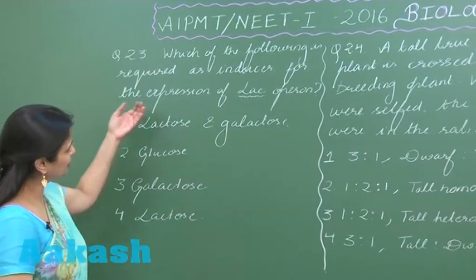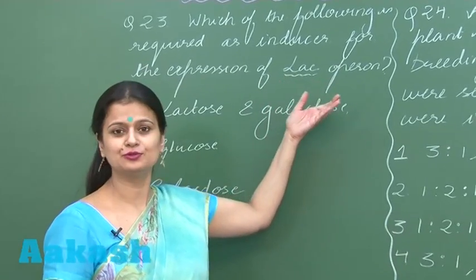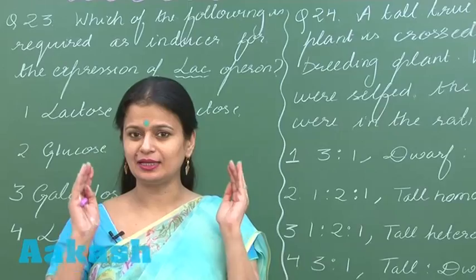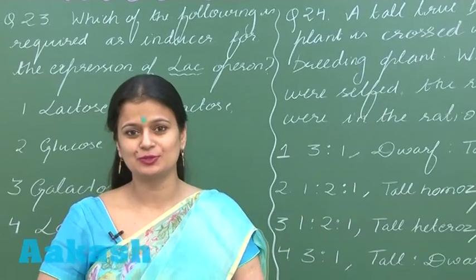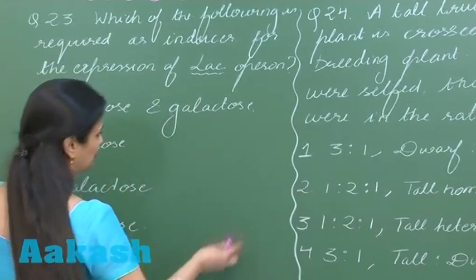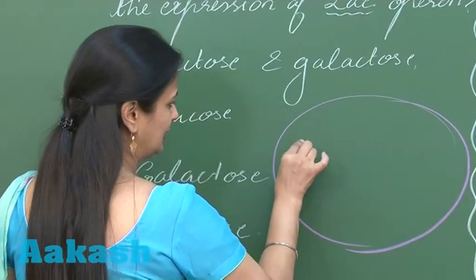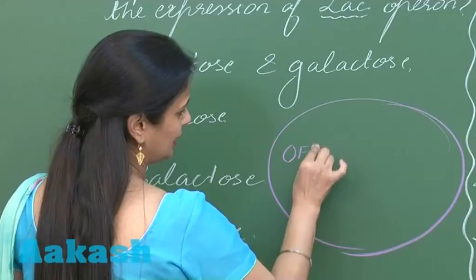In question number 23, we have to look for the inducer of lac operon. Lac operon is an inducible operon. In the inducible operon, what happens naturally or normally is it is in the off state.